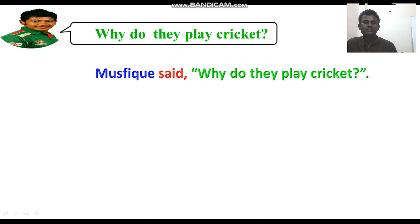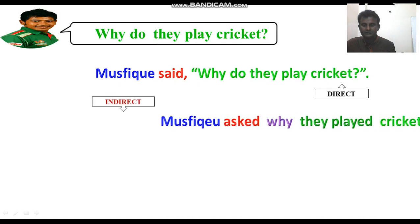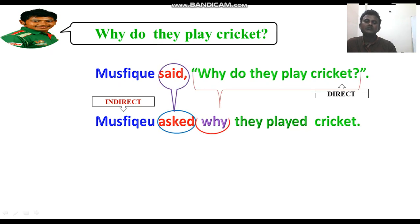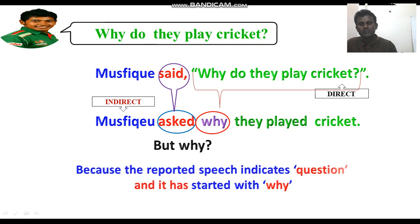For example: 'Why do they play cricket?' — here 'said' becomes 'asked' and the inverted comma is replaced with 'why', because the reported speech again indicates a question. That is why 'said' becomes 'asked' and the inverted comma is replaced with 'why'.